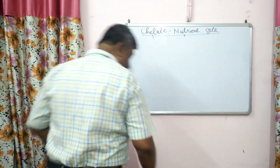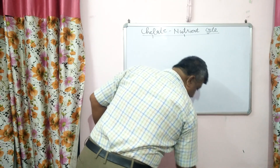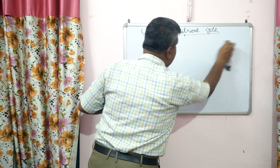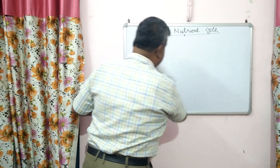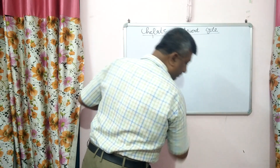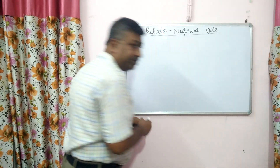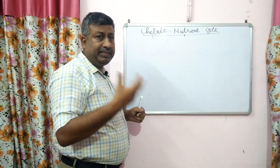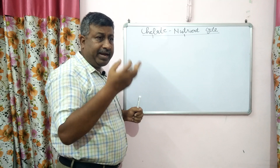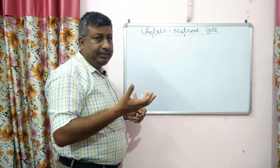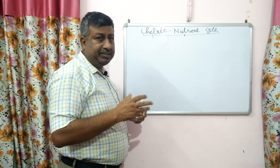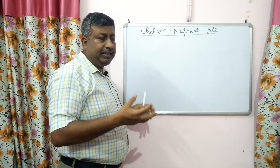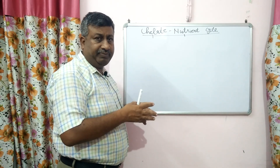These are metallic nutrients — why only metallic nutrients? Because these metallic nutrients are cations and they are reactive, meaning they can make bonds. Bond formation is important. So those cations which can make bonds — their availability can be increased. If they don't make any bond, they cannot be fixed with the chelate.